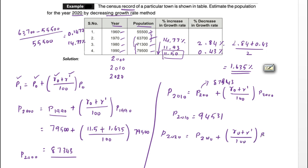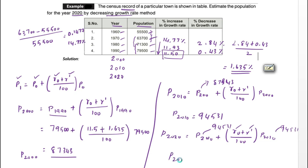Solving for 2010 gives P(2010) = 94,531. Then for 2020: P(2020) = P(2010) + [(r0 + r') / 100] × P(2010), substituting P(2010) = 94,531, r0 = 11.5, and r' = 1.635. Solving this gives the population of 2020 as 1,00,765. This is the final answer.